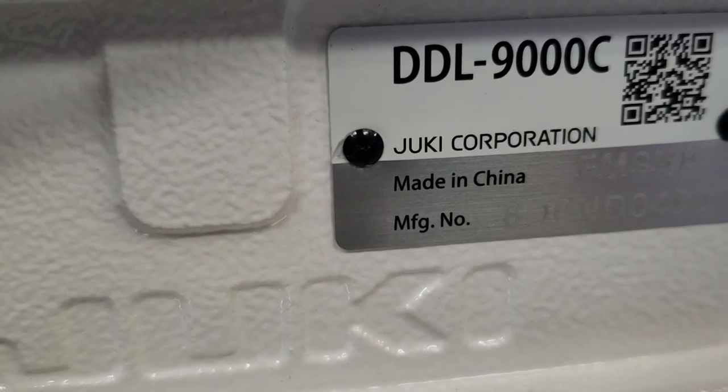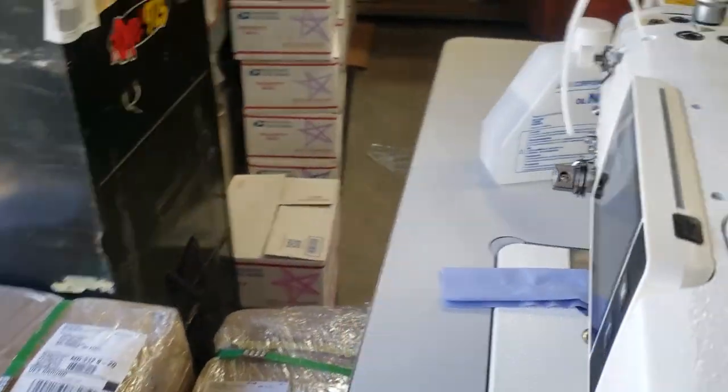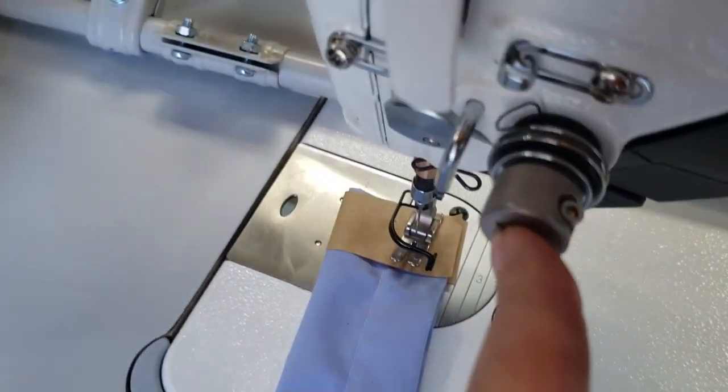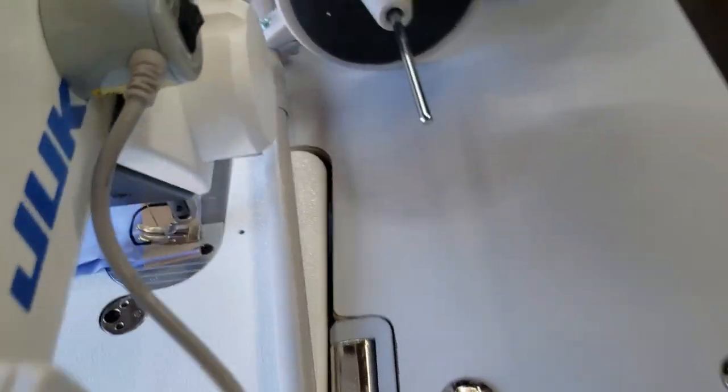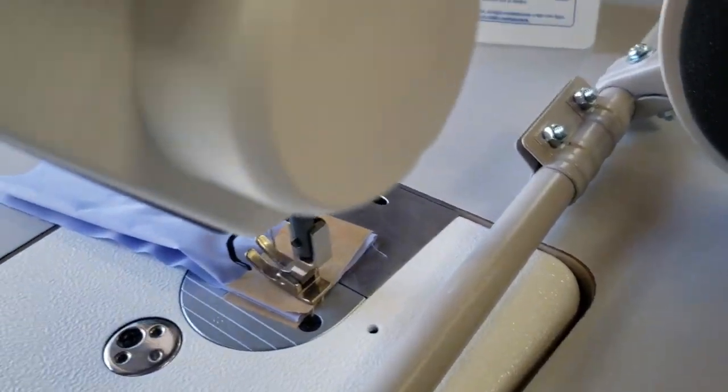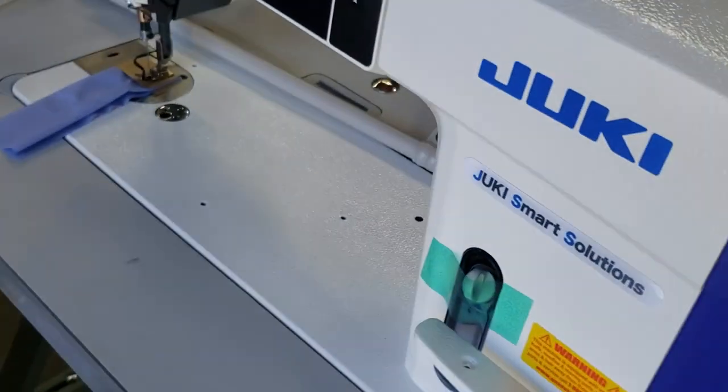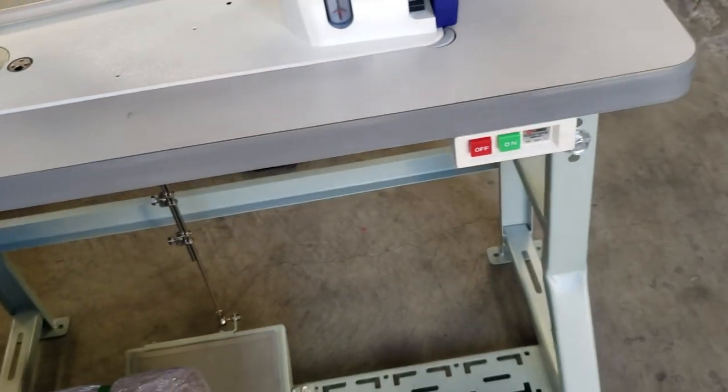DDL 9000 C full function has different foot adjusting, different tension. And here there is a totally different type of machine. That full function still has the same table, the same leg, but the computer is obviously different.